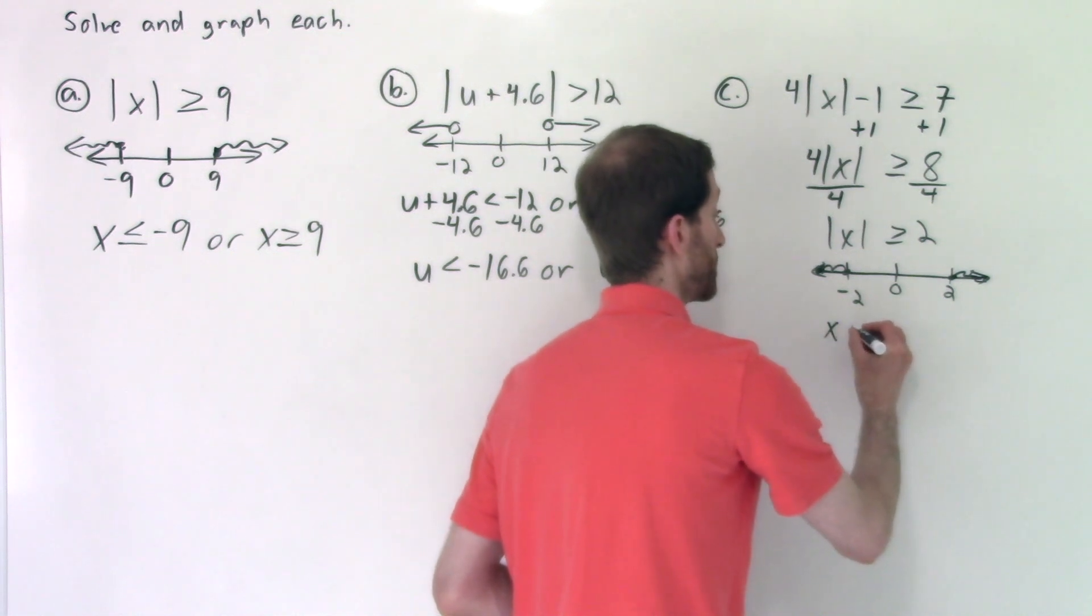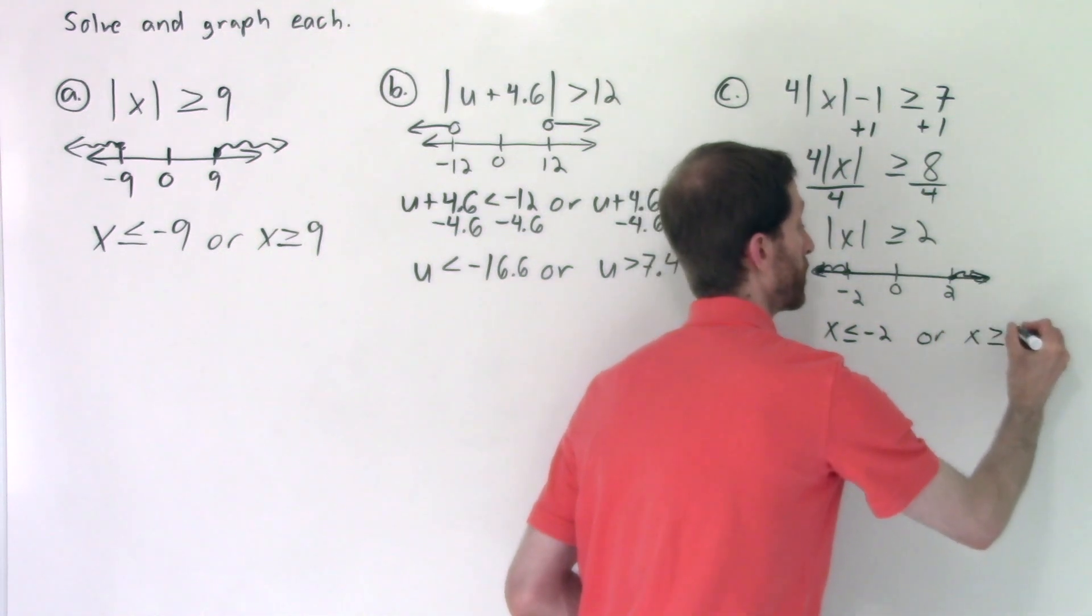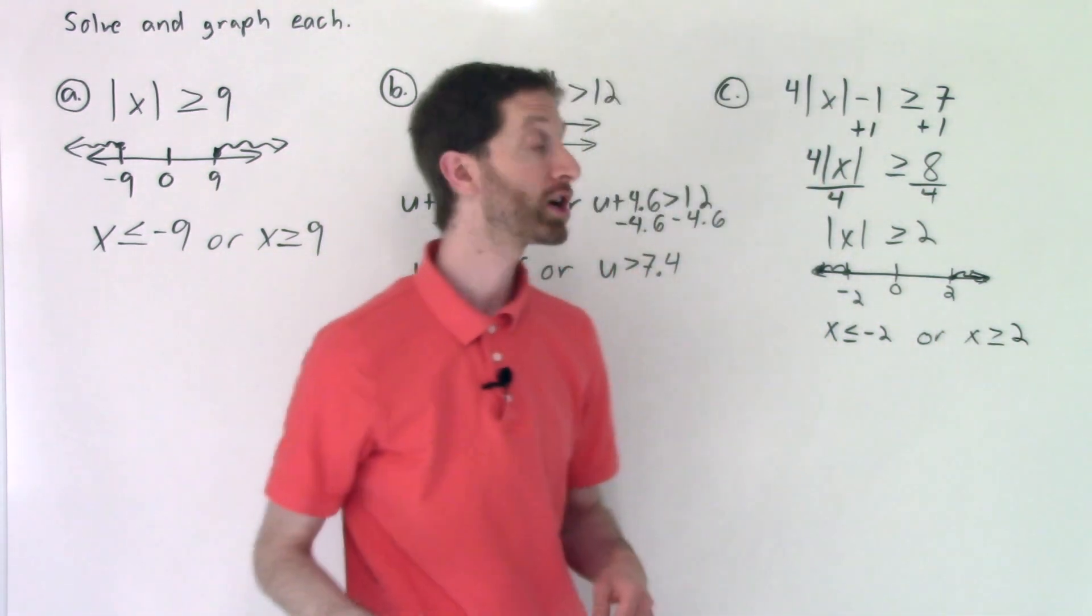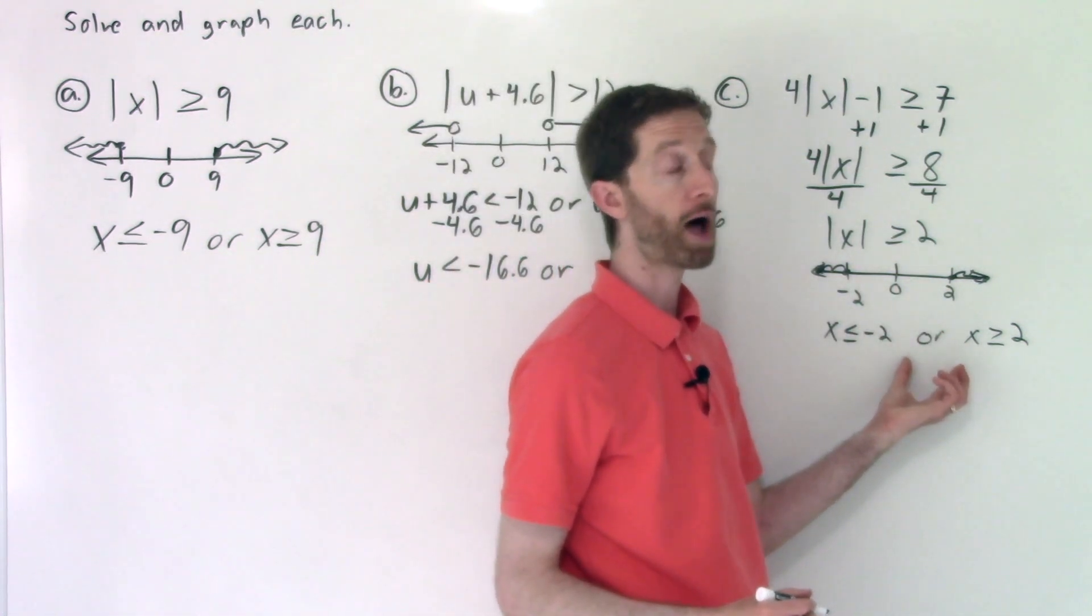So X is less than or equal to negative two, or X is greater than or equal to two. So if you take a look at this, it makes a lot of sense graphically going from here to here if you've got your compound inequalities down.